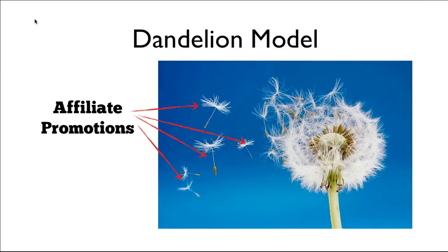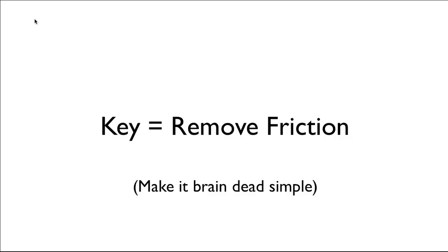And that's what you want. You want to make sure that it's as easy as possible for your affiliates to come along and say, 'Great, I can take this promotion and use it in my emails, on my blog, in my YouTube videos, on Squidoo.' However they're going to promote it, you want to make it as easy as possible. A lot of folks don't go to the lengths you need to remove friction. The big takeaway of the dandelion model is to remove the friction.